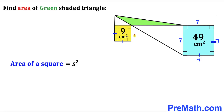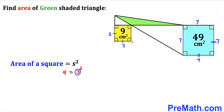Now let's focus on this yellow square whose area has been given to us as 9. According to the square formula, 9 can be written as 3 squared. So the side length of this yellow square is 3 across the board.